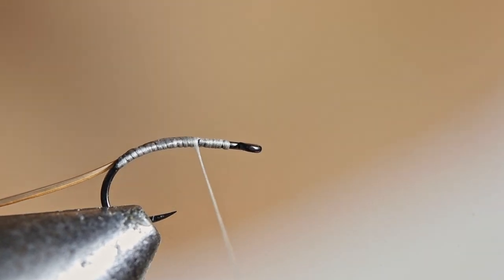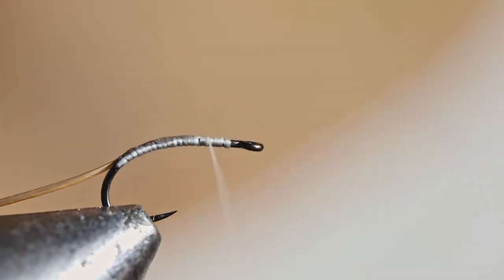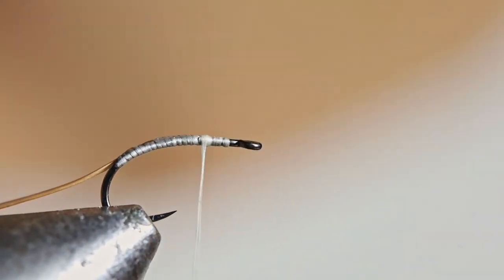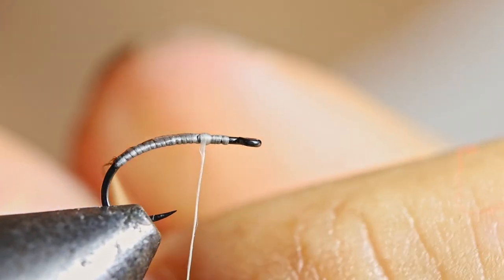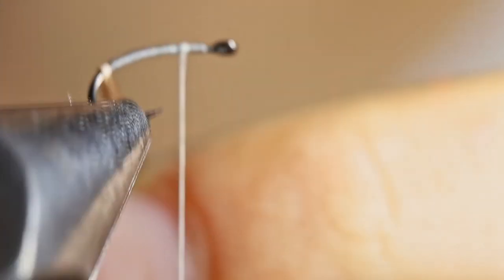Now, I've got a rotary vise, so I'm just going to wrap my thread a few times, and then hold the biot and wrap. But if you don't have a vise like this, you can also just wrap it by hand quite easily.